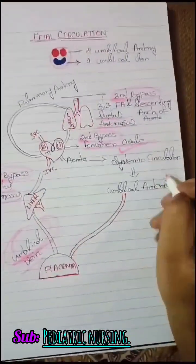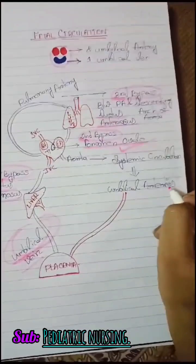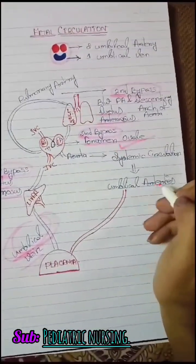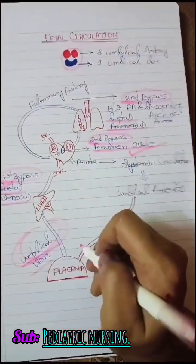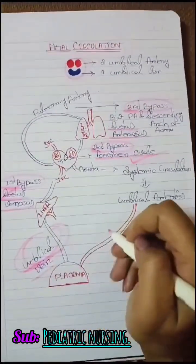By that, the umbilical arteries carry the deoxygenated blood back to the placenta for filtering it. Thank you very much.